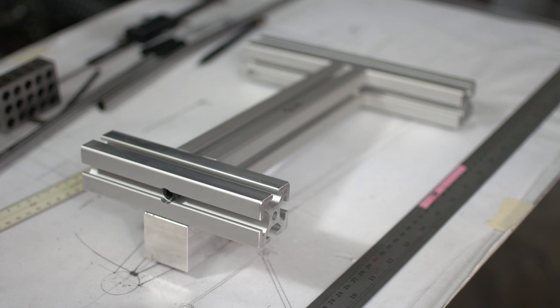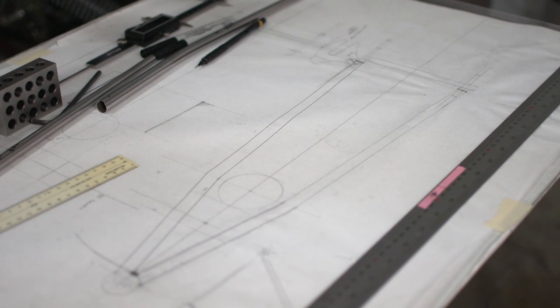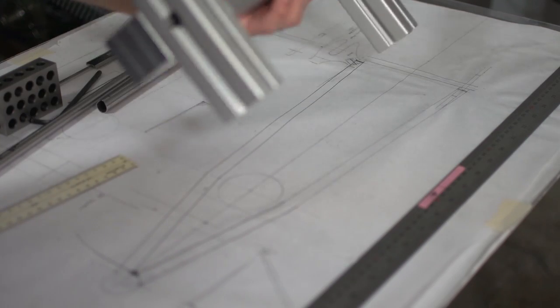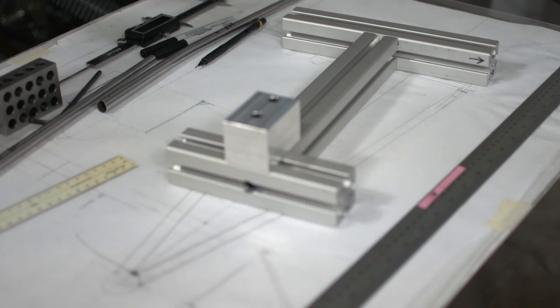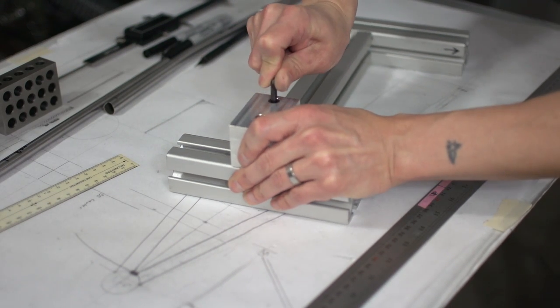Alright so the next thing is how do I get the seat stays in the fixture and in the correct location. I decided to use my drawing but to do that I need to remove the clamping block so that the fixture can sit flat onto the drawing.